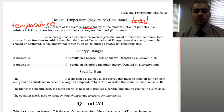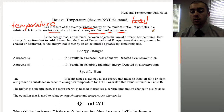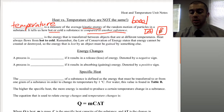Temperature tells us how hot or cold something is relative to another substance. If the particles are moving faster, it's going to feel hotter; if they're moving slower, it's going to feel colder. So if we have two objects, A and B, and A has particles that are moving faster, it's going to feel hotter — it's going to be a higher temperature relative to B.